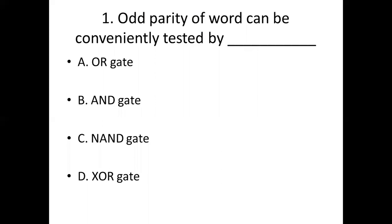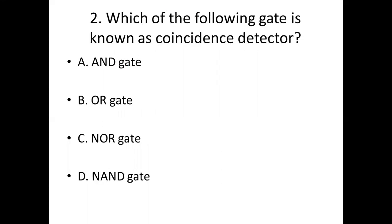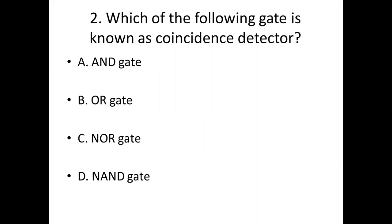Second bit: Which of the following gate is known as Coincidence Detector? Option A: AND gate. Option B: OR gate. Option C: NOR gate. Option D: NAND gate. Answer: Option B, OR gate.